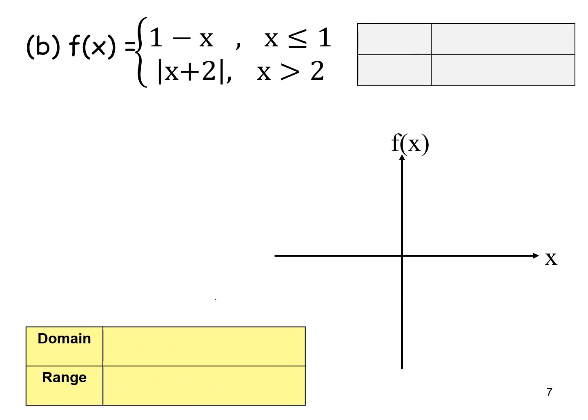For example b, f(x) equals 1 minus x for x less than or equal to 1, and modulus of x plus 2 when x is greater than 2. For the first part, substitute x equals 1 to get y equals 0, which is a closed circle.